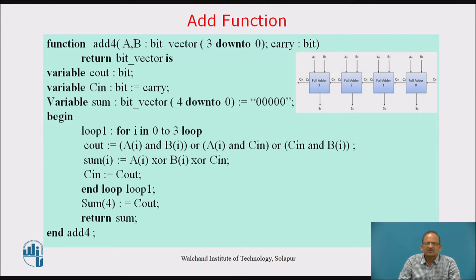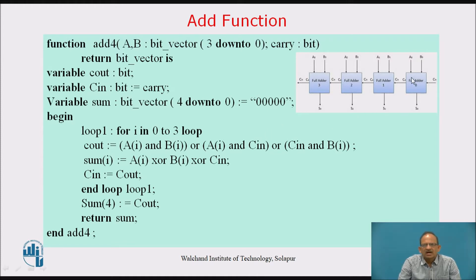Now let us consider one example of a function. We want to implement a 4-bit adder — a 4-bit parallel adder with 4-bit numbers A and B, consisting of bits A0, A1, A2, A3 and B0, B1, B2, B3 added together using 4 full adders (FA0, FA1, FA2, FA3). The LSB of both numbers is given to the first full adder; the sum bit and carry propagate to the next full adder, and so on. This is how numbers A and B are added.